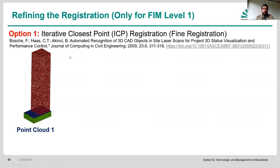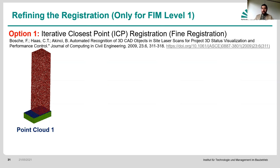This is what we call an iterative closest point registration, or fine registration. This paper by Beauches talks about how we can utilize this well-known method for registering laser scanner point clouds from two different scanners, given an initial target-based registration.